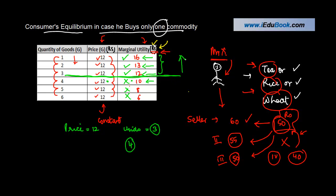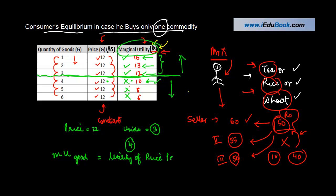Above three units, the marginal utility exceeds the price, so the consumer keeps buying. At the fourth unit, marginal utility falls below the price and he stops. This is the point of consumer equilibrium: for one commodity, a consumer is in equilibrium when the marginal utility of the good equals the utility of the price paid — both are 12, at a quantity of 3.